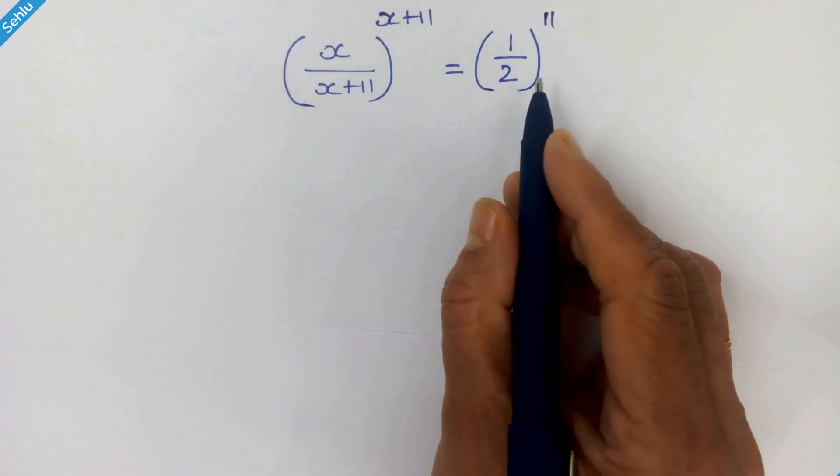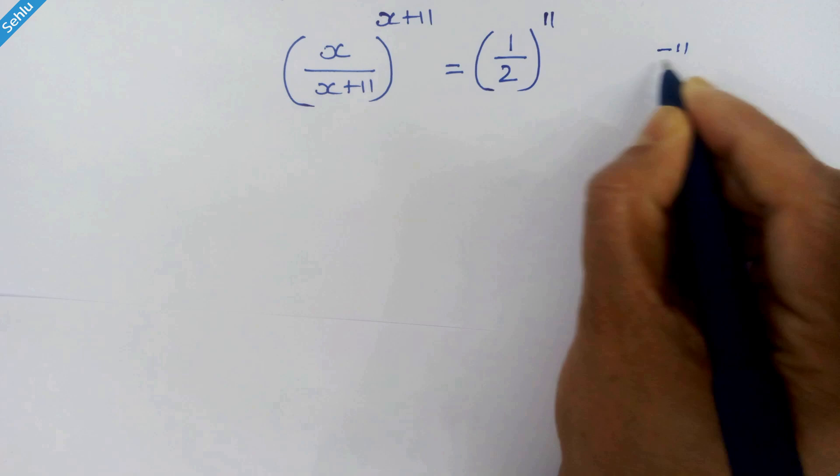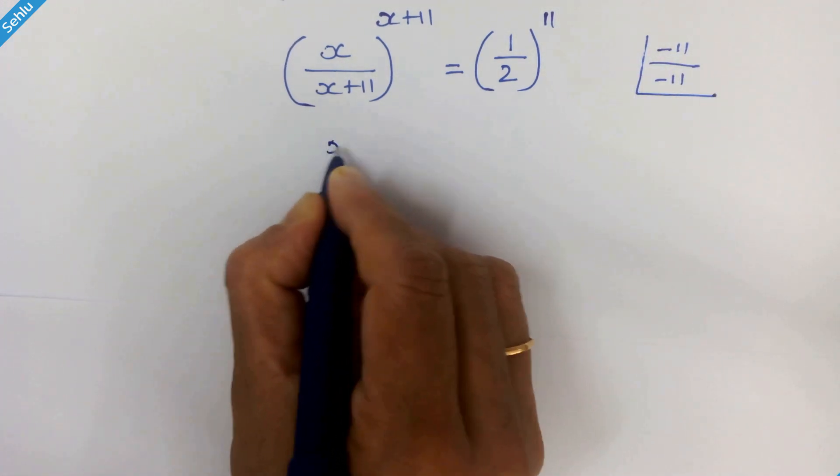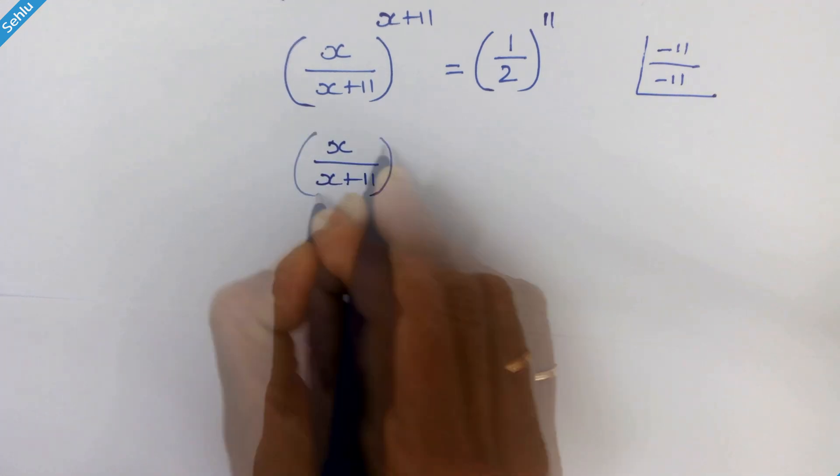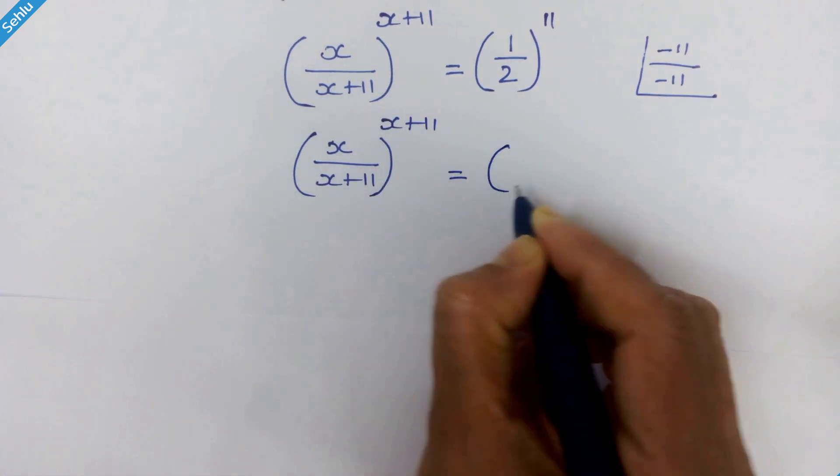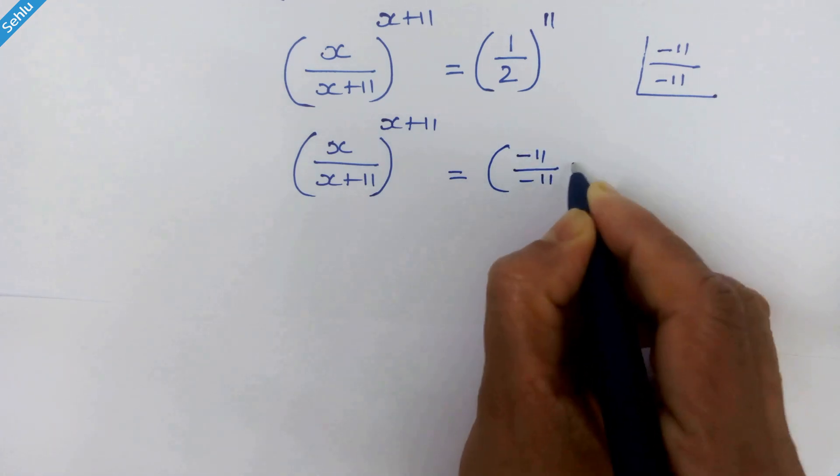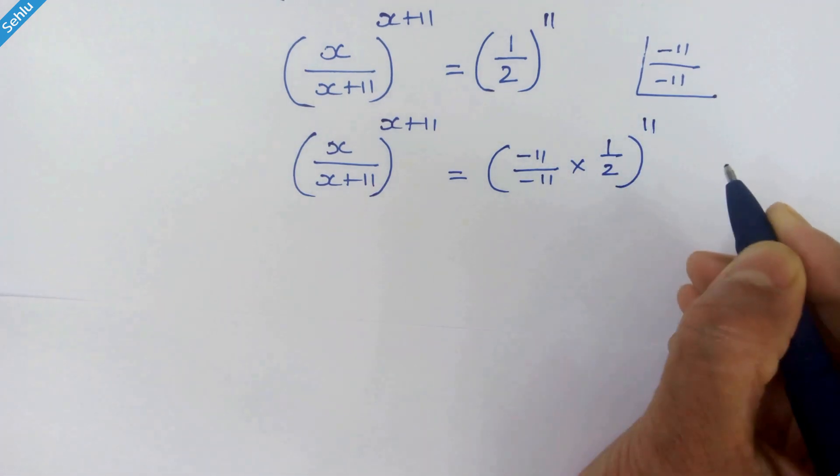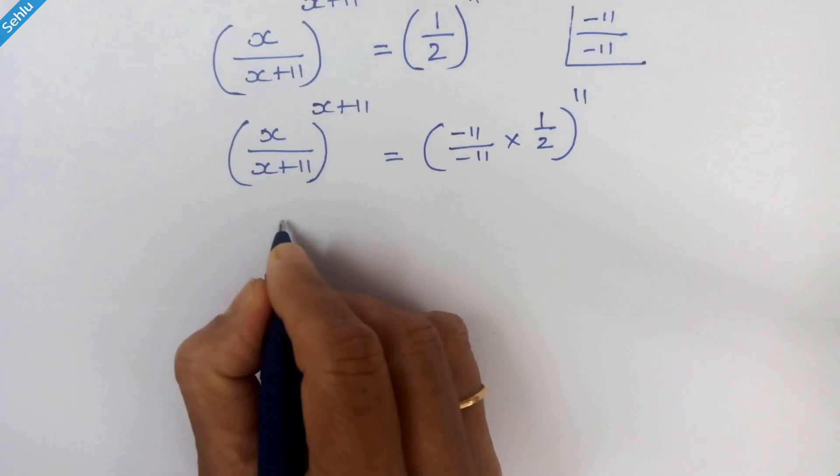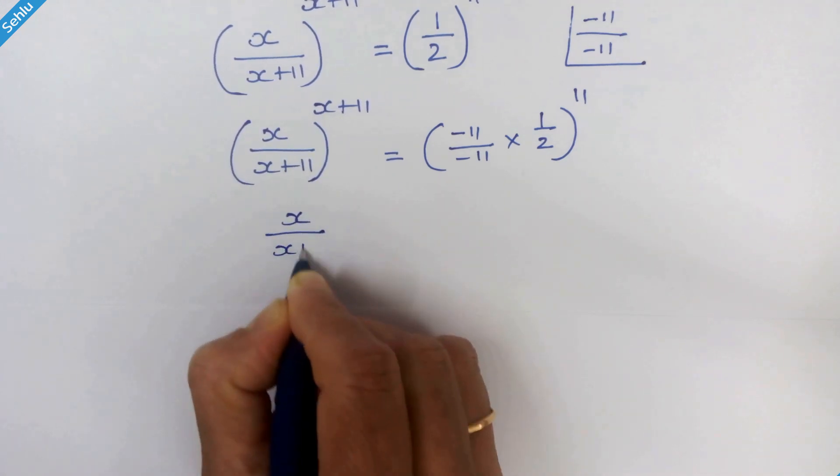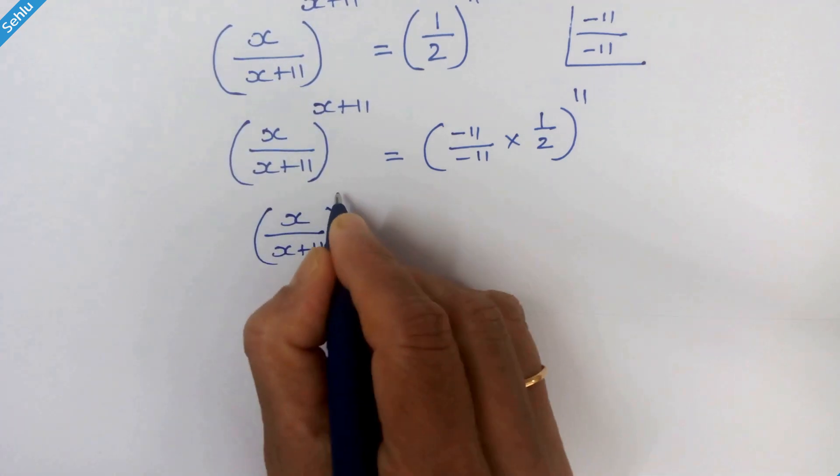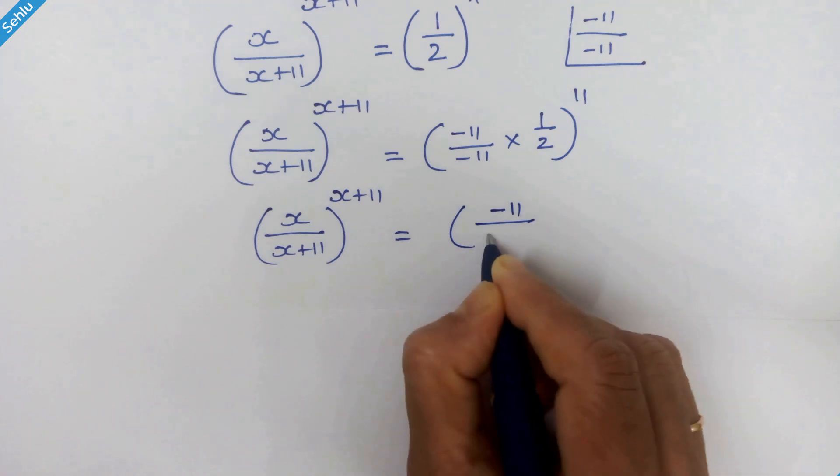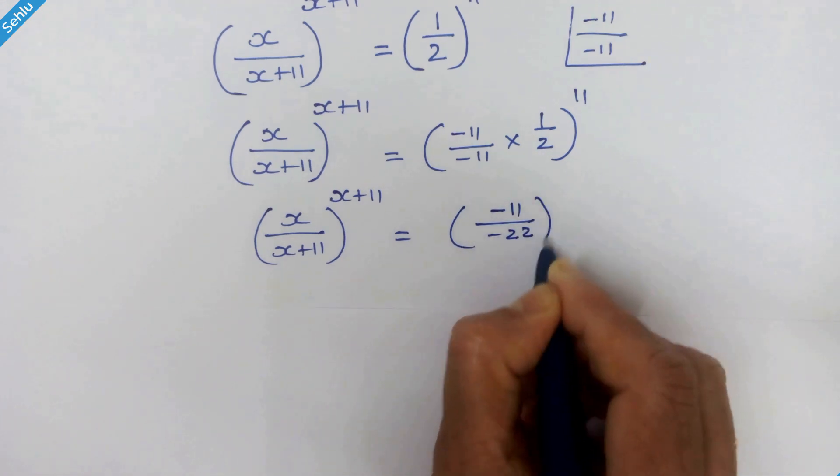Now inside this bracket we will multiply minus 11 upon minus 11. So we have is equal to minus 11 upon minus 11 times 1 upon 2 whole raise to 11. So it will be x upon x plus 11 whole raise to x plus 11 is equal to minus 11 upon minus 22 whole raise to 11.